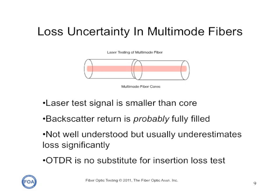OTDRs have other errors associated with measuring multi-mode fibers. The outgoing laser test signal is much smaller than the core, so it tends to underestimate loss. And the backscatter signal is probably fully filled, although this is not well understood. So what you see is an average of the outgoing and the return signal. The OTDR, particularly with multi-mode fibers, is no substitute for a properly done insertion loss test that controls the mode power distribution from the test source.